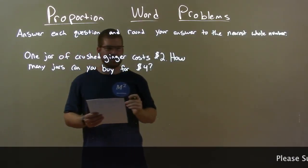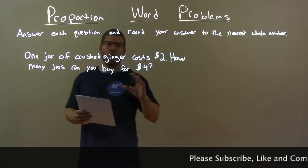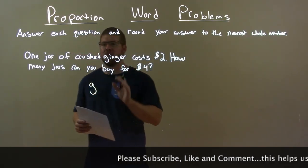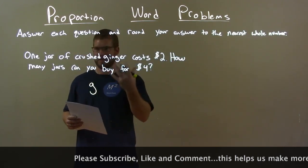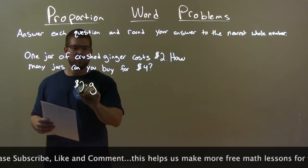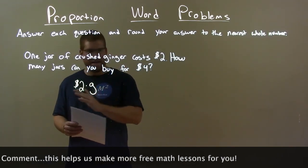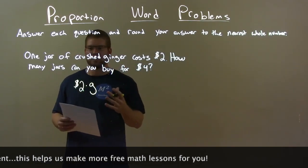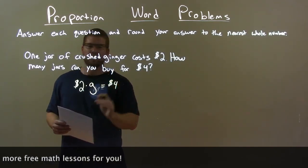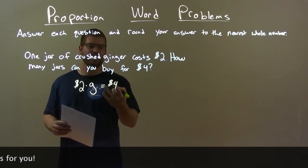One jar of crushed ginger costs $2. How many jars can you buy for $4? What I want to do is create an equation. I'm going to let the letter G represent the number of crushed ginger jars we're going to get. Since they're $2 per jar, $2 times G lets us set up the cost of a variable number of ginger jars. So now we want to see how many we can afford with a total of $4. $2 times G is equal to $4.